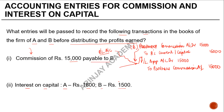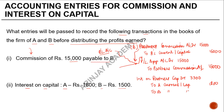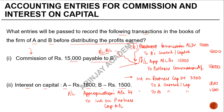This is also something which has to be passed through the profit and loss appropriation account. So you pass an entry: interest on partner's capital debit 3,300 — to A's current account or capital account by 1,800, and to B's current account or capital account by 1,500. Then this interest on partner's capital will be transferred: profit and loss appropriation account debit to interest on partner's capital account 3,300.